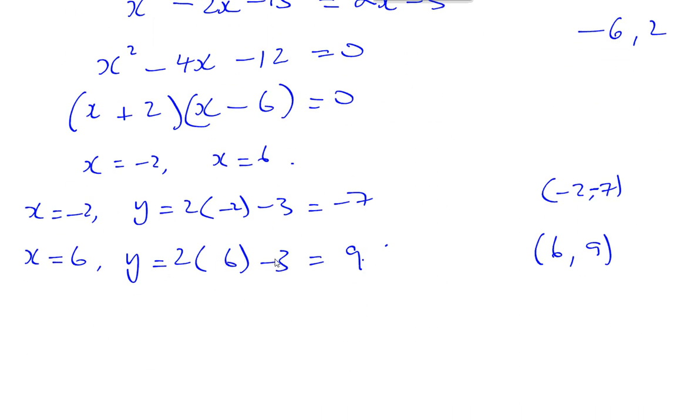So, you have 2 times 6, which is 12, minus 3, which is 9. So, 6 and 9 is the other coordinate. So, we have the coordinates of A and B.